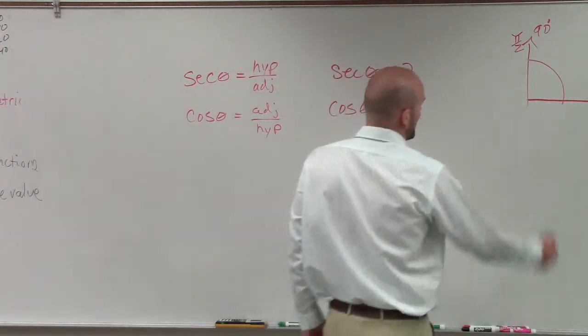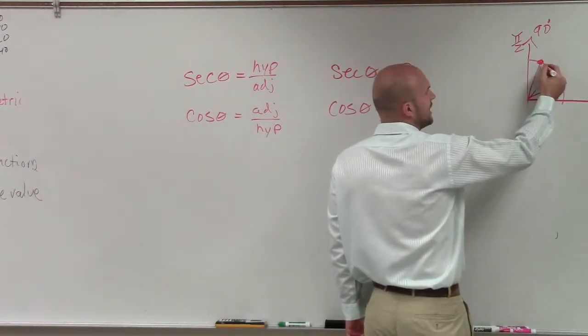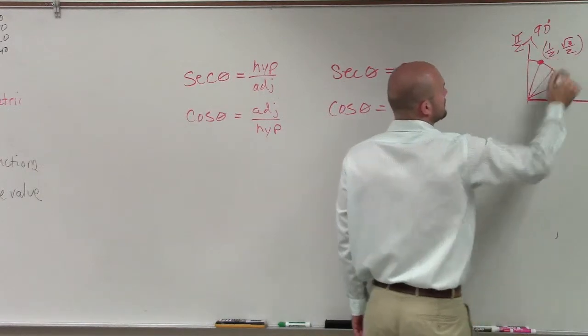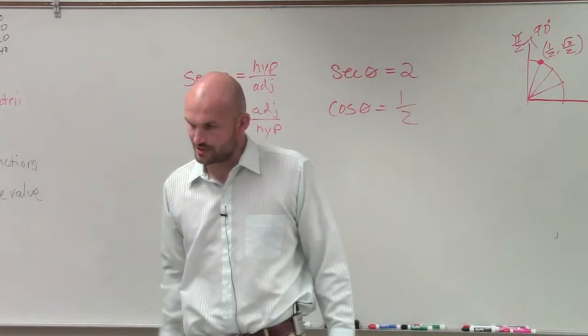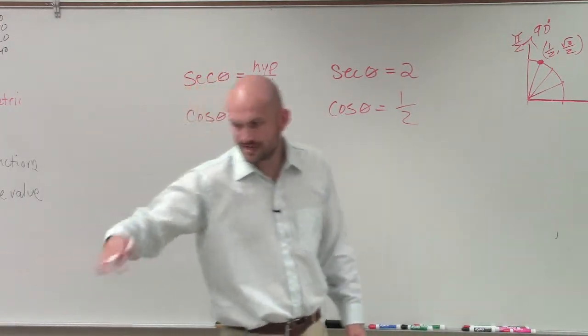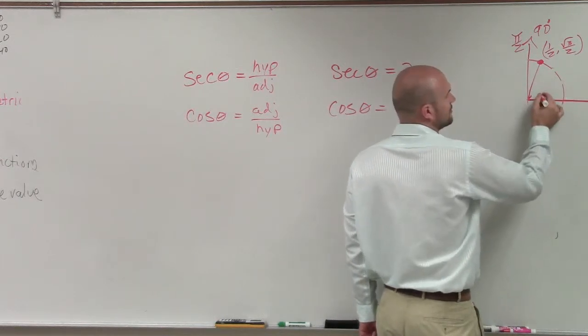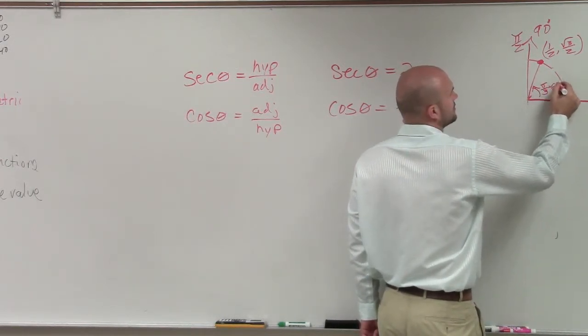So where in the first quadrant is cosine equal to 1/2? So now we have to go back and look at our angles and say, well, cosine is equal to 1/2 at this point, right? By knowing your unit circle for the first quadrant, we know that's in the first half. And then we need to say, well, what is that angle? Well, that angle is π/3 in radians or 60 degrees.